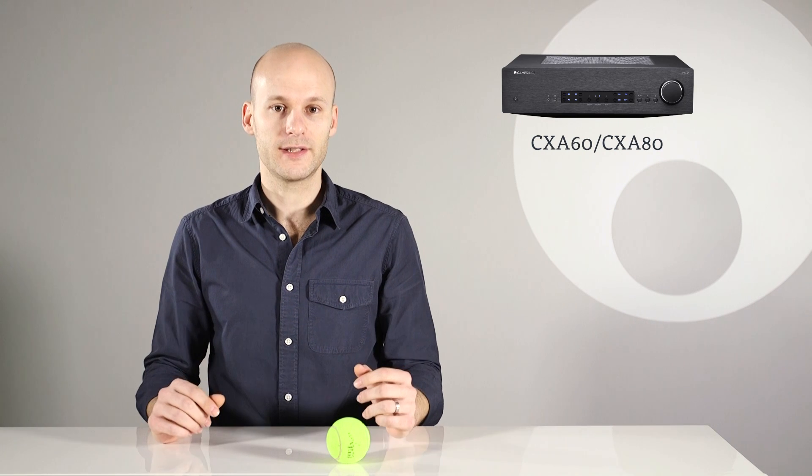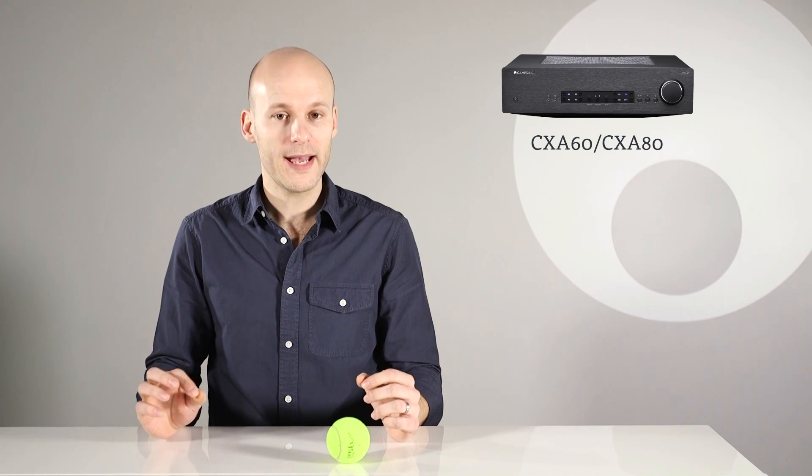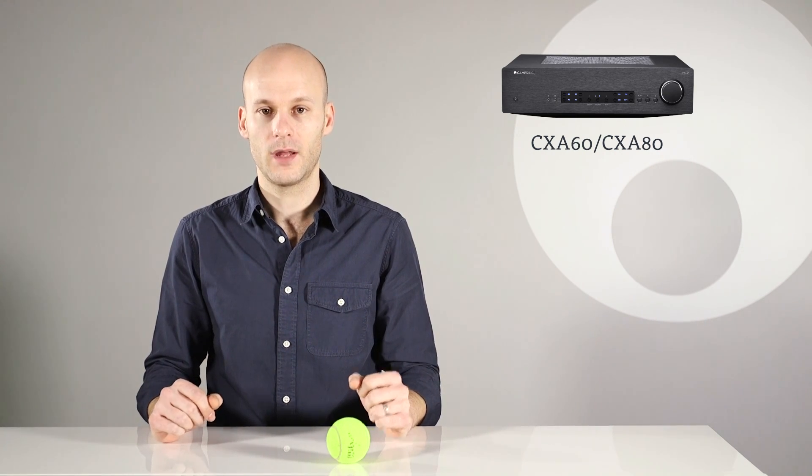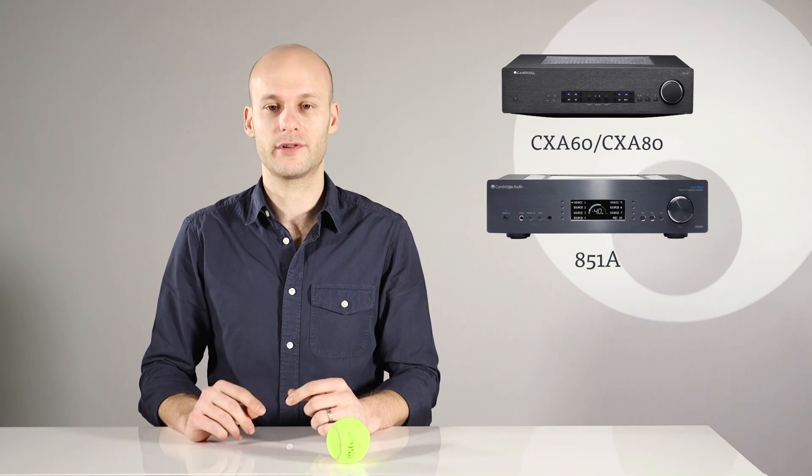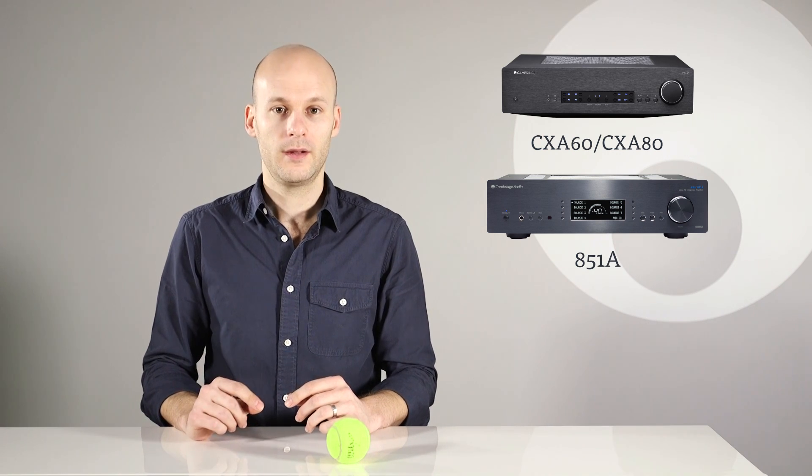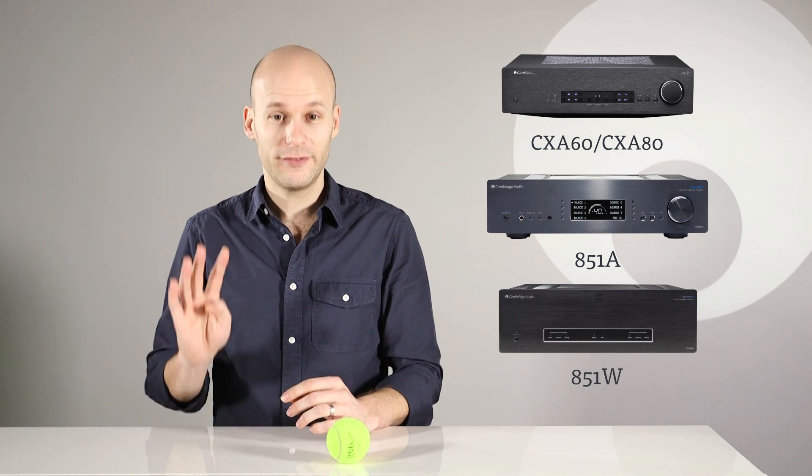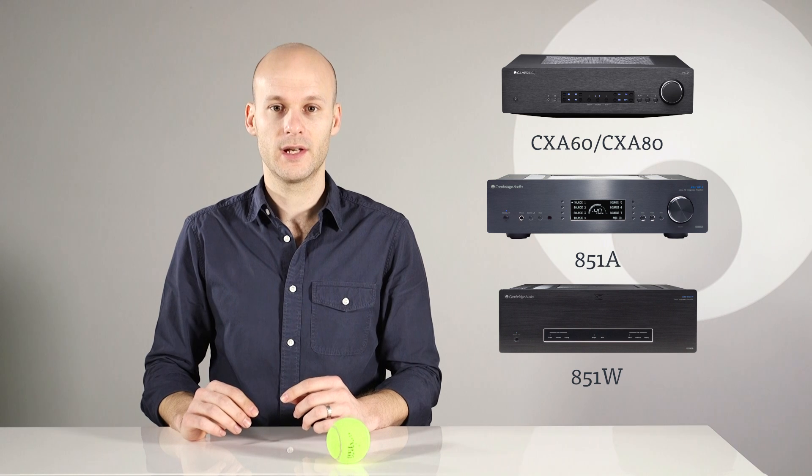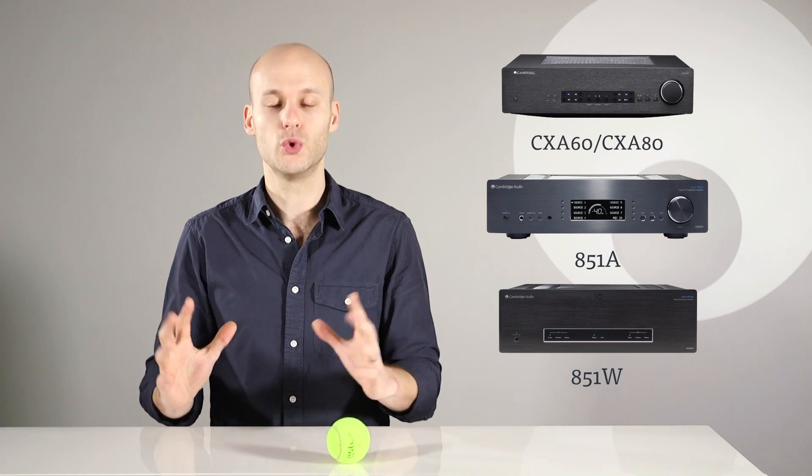The CX series amplifiers use a single pair of output transistors. The 851A uses two pairs of output transistors, running in parallel for more power. The 851W uses four pairs of output transistors, running in parallel for a huge power output.